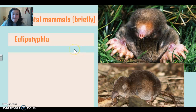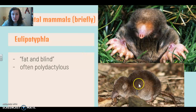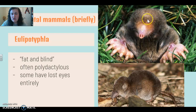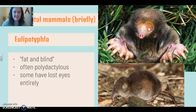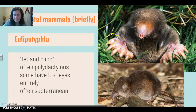The next group is the Eulipotyphla. Their name literally means fat and blind, which is kind of sad, but this includes your moles and your shrews. A lot of times these guys are polydactylist, which you can see here, meaning they have more fingers on their hands than they're supposed to. And a lot of them, as you can see, do not have eyes — technically they have them, they're just extremely underdeveloped and covered. His eyelids are still fused together because he lives underground and doesn't need them. These guys are subterranean, so they've lost the use of their eyes. His hands are so big and terrifying because he's digging around a lot.